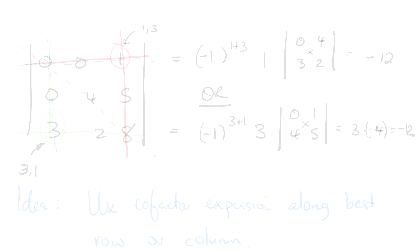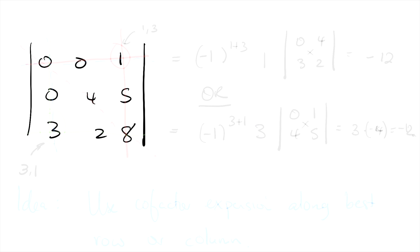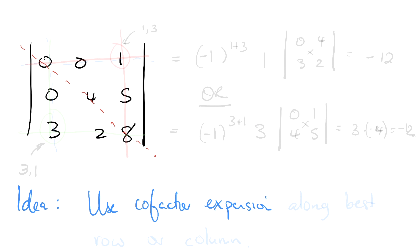Say we've got the matrix 0, 0, 1, 0, 4, 5, 3, 2, 8, and we want to find the determinant. It actually looks triangular, but it's not. We always orient ourselves along the main diagonal, and this matrix has non-zero entries both above and below the main diagonal. So this is not a triangular matrix and we can't use that trick. However, we can always fall back on cofactor expansion — picking cleverly along the best row or column. In this case, the first row and first column both have a lot of zeros, so they're good options. Let's do both.